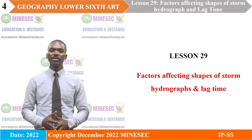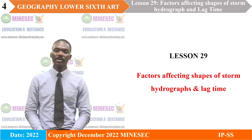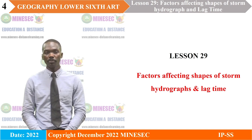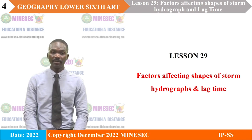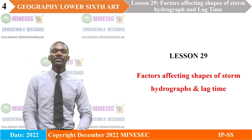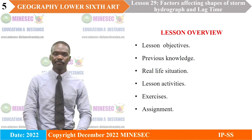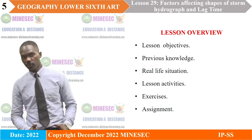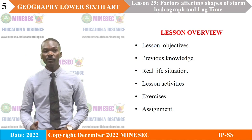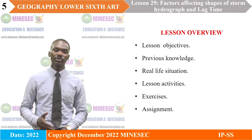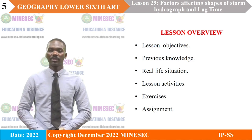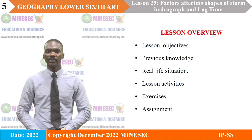Our lesson of today, lesson 29, is factors affecting the shapes of storm hydrographs and lag time. The lesson overview goes this way: we shall pay attention to lesson objectives, previous knowledge, real-life situation like in your community what can happen, lesson activities, exercises, and an assignment.